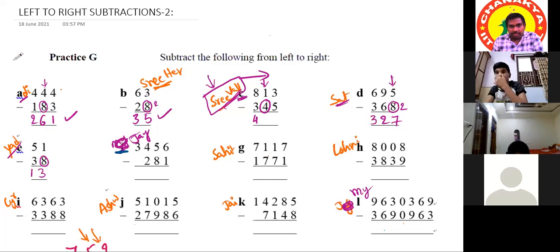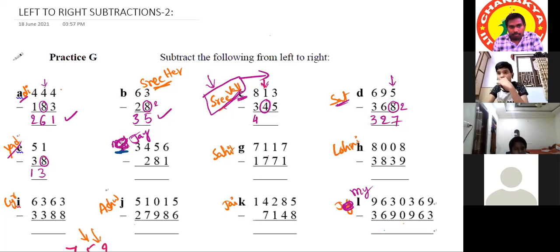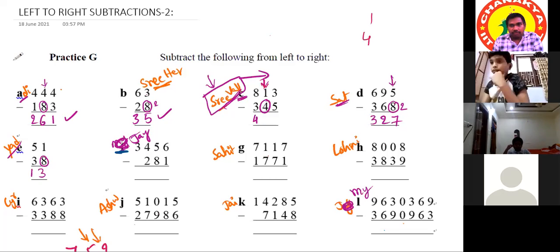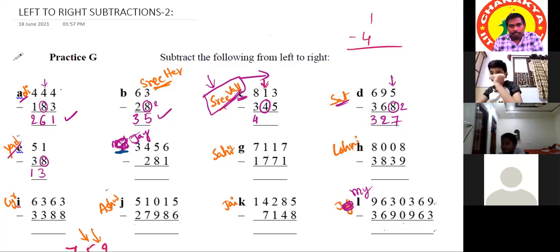Before writing 5, the teacher says to check the next place — is it a match or mismatch? Sri Wallab says mismatch. Teacher asks how he knows. Sri Wallab explains: because we cannot subtract 4 from 1. Teacher confirms and says to reduce 5 by 1, making it 4.